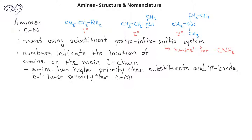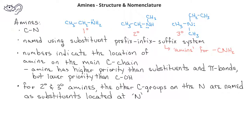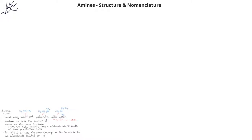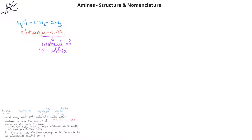For secondary and tertiary amines, the other carbon groups on the nitrogen are named as substituents located at the N. In this first example, we have a two-carbon chain with an NH2 group bonded to one of the carbons. We would name this ethanamine, where the amine suffix has replaced the E for the hydrocarbon. We do not need a 1 since, by definition, whichever of the two carbons the nitrogen is bonded to will be the first carbon.